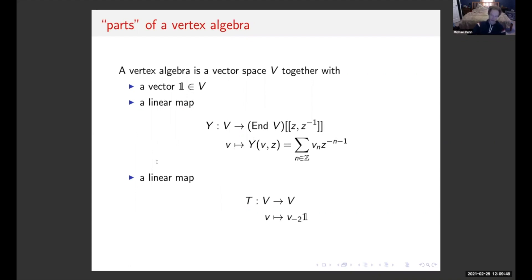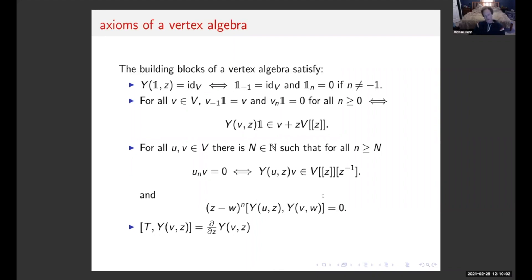We also have the translation operator T, which takes V to V₋₂1 — the negative second product of V with the vacuum. The axioms include: plugging the vacuum into the vertex operator gives the identity (equivalent to saying the negative first multiplication is the identity operator), and all other products involving the vacuum are zero. The creation axiom says that attacking the vacuum with the negative first multiplication of V re-achieves V, and attacking the vacuum with non-negative modes gives zero.